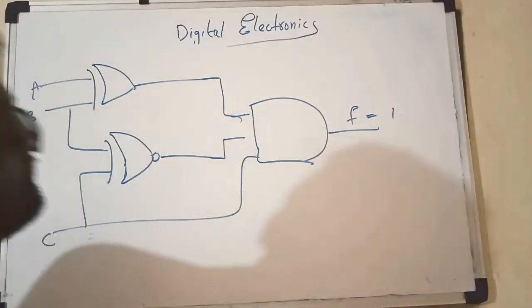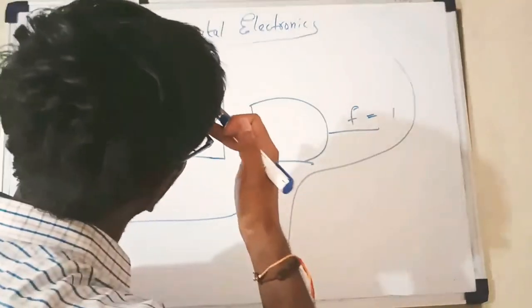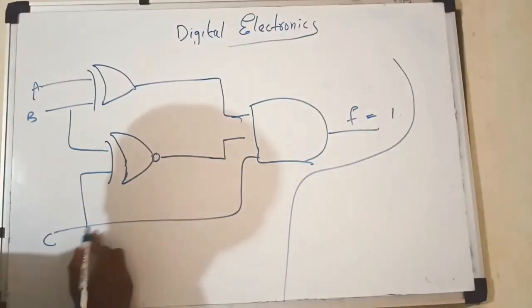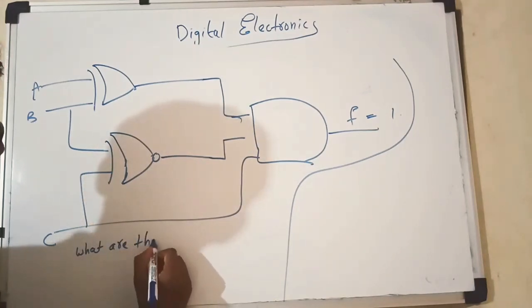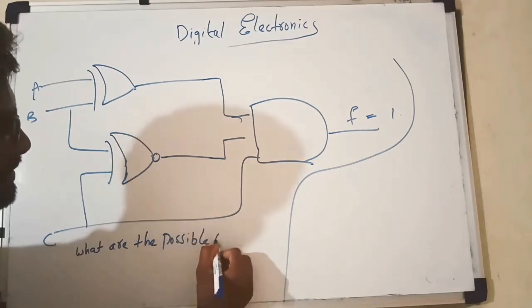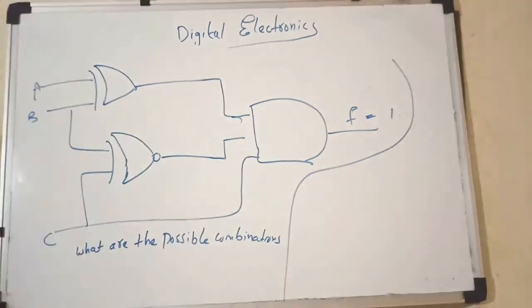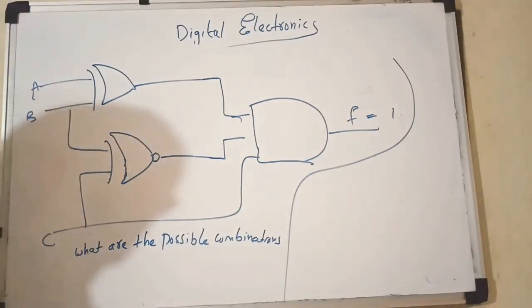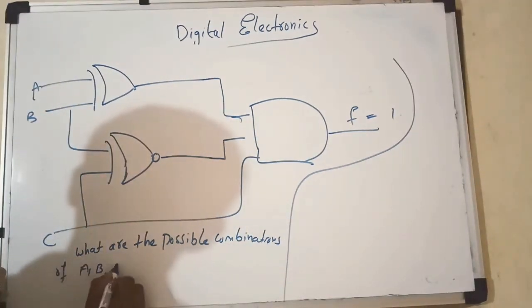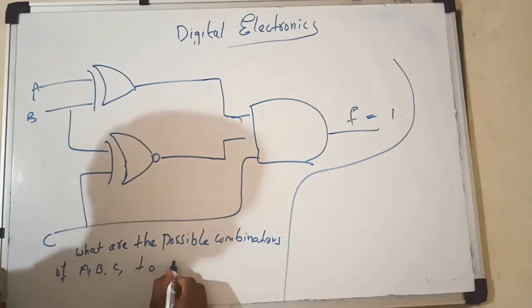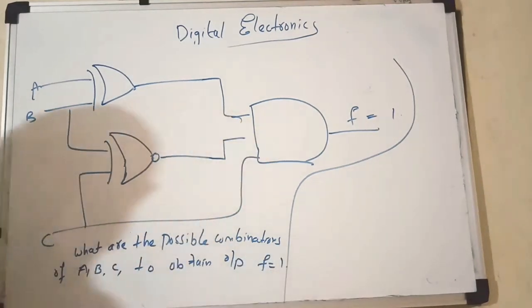Given the output F is 1. The question is: what are the possible combinations of A, B, C to obtain output F equal to 1?